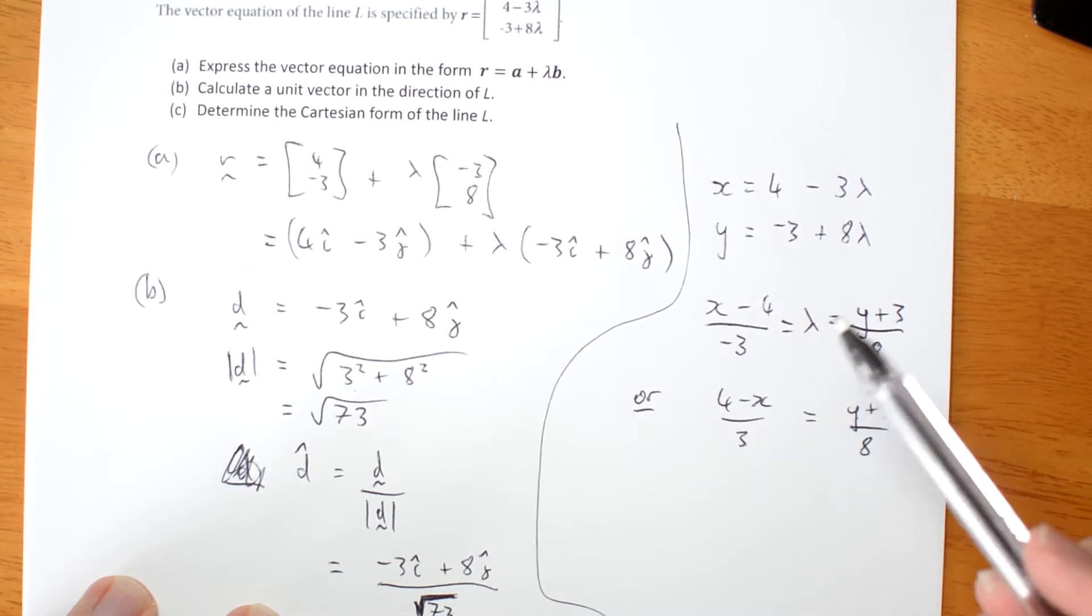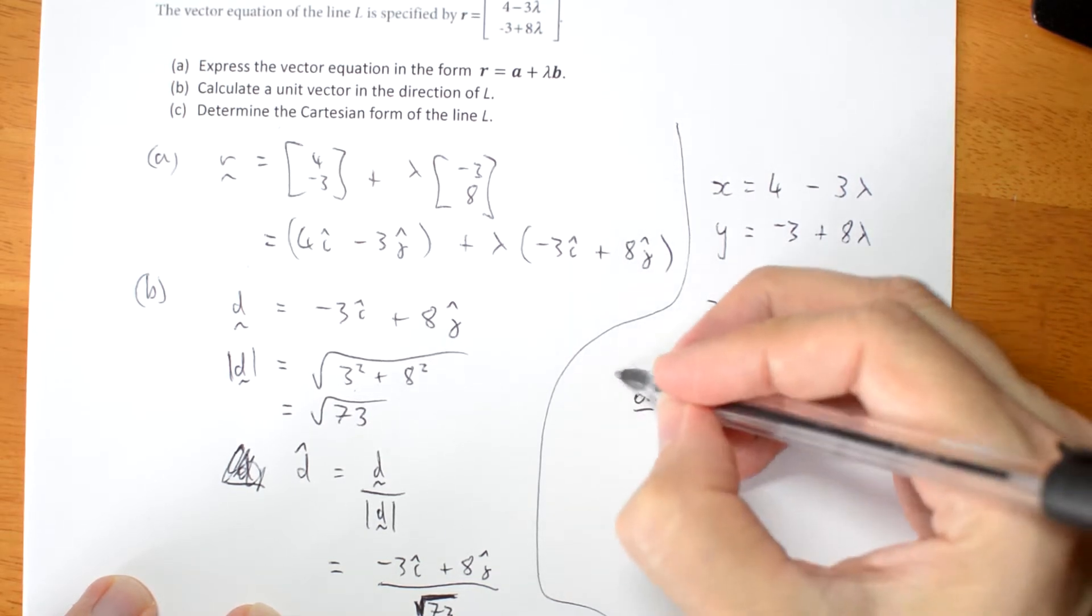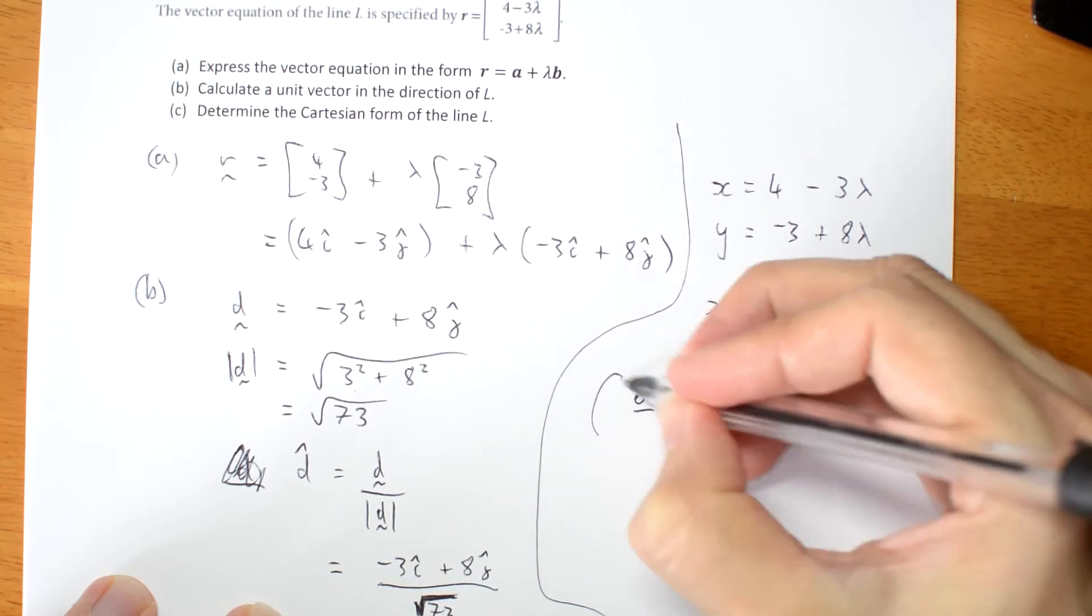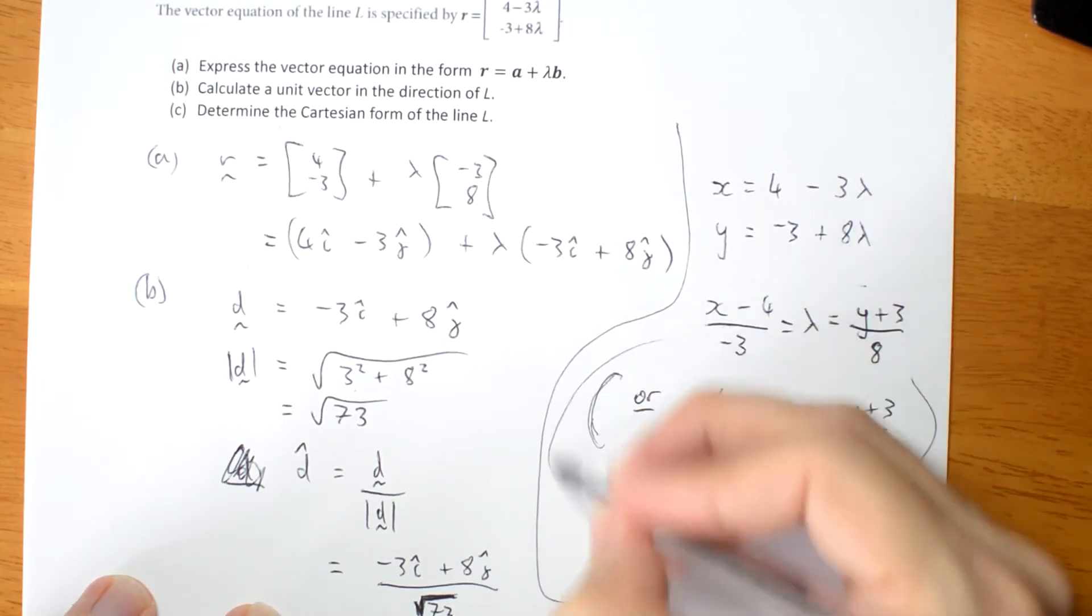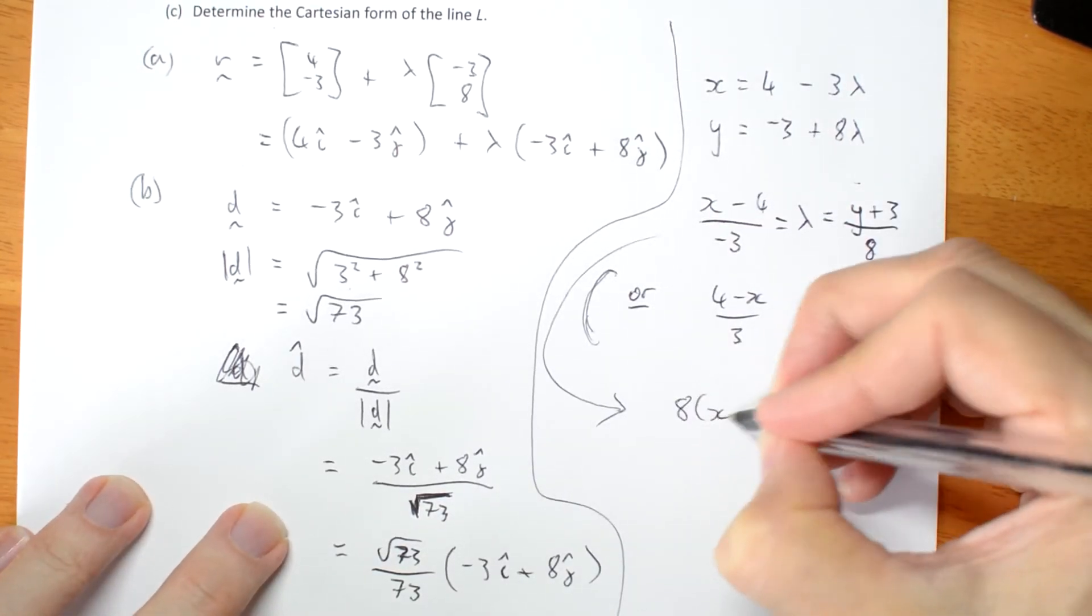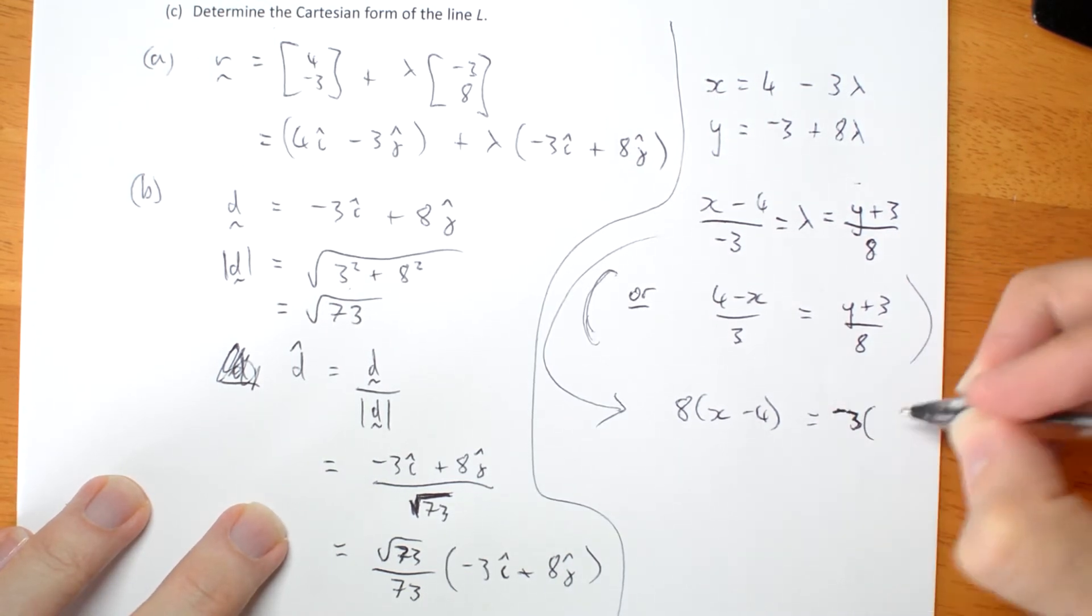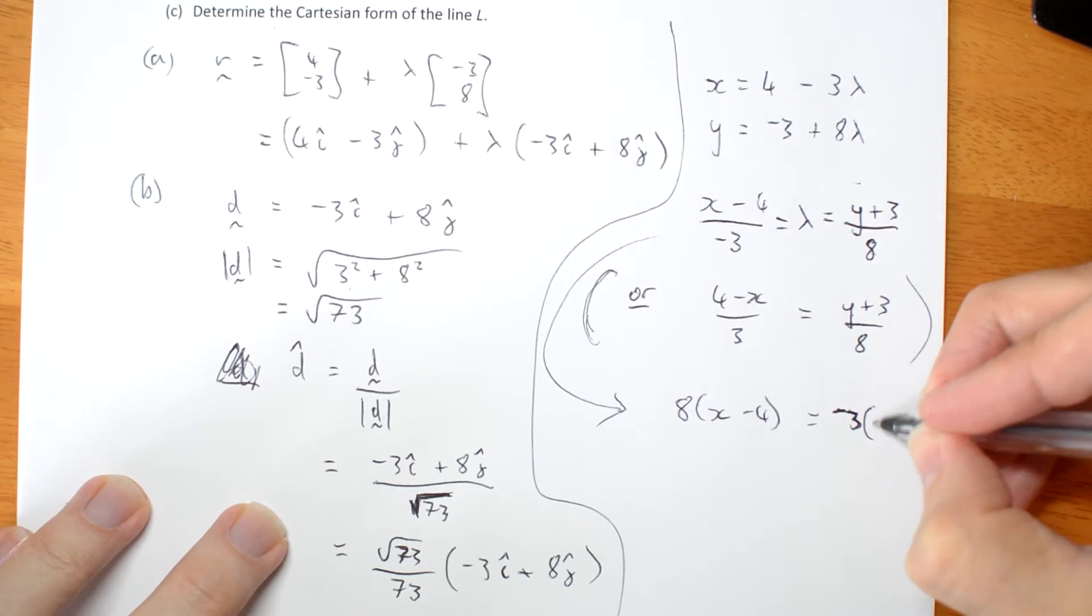Either way, if I want to work out the Cartesian form in standard form, as your textbook does for this example, then all I have to do is cross multiply. And you can pick either equation, it doesn't matter. I'll just pick the first one. I just wanted to show you this, so you can see what some people do. But let's take this version. So we have 8, x take 4 equals negative 3, y plus 3.